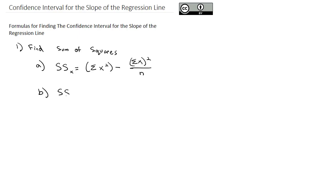The second piece is the sum of squares in the y direction, which is almost identical but with y's. It's the sum of the y squareds minus the sum of the y's squared divided by the sample size. The third piece is the sum of squares of the x-y pairs, which is the sum of the x-y's minus the sum of the x's times the sum of the y's divided by the sample size.